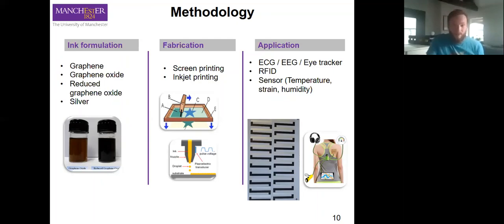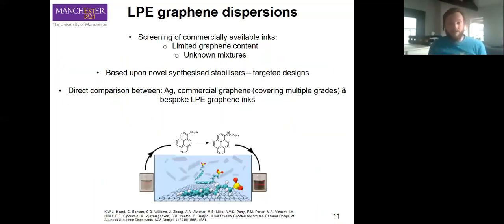In order to do this, we make our own graphene. We've been screening commercially available inks. Often these, as I said earlier, have limited graphene content and are unknown mixtures.